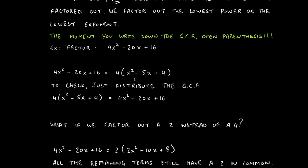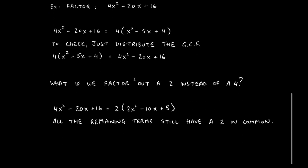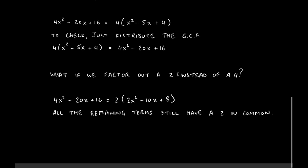What if we had factored out a 2 instead of a 4? It's still a common factor since 4, −20, and 16 are all divisible by 2, leaving 2x² − 10x + 8. However, all the remaining terms still have a 2 in common, which tells us that 2 is not the greatest common factor — we want the greatest, not just any common factor.